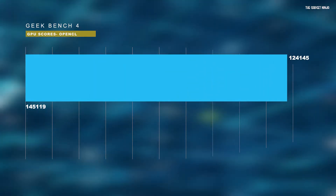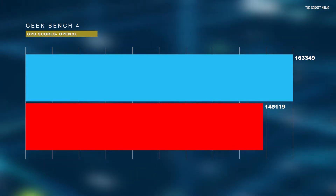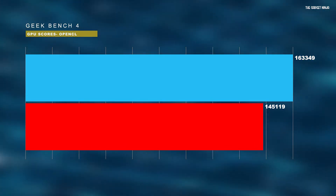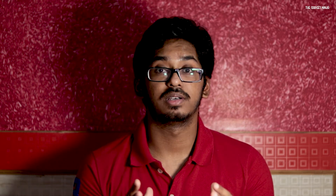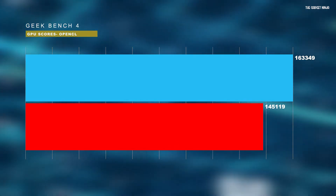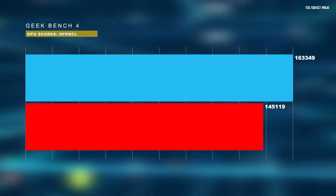Moving to the GPU scores, here the Windows machine was better, which is understandable in my opinion, because Hackintosh machines were never good on Nvidia GPUs — the drivers for the 1070 in my build are pretty outdated. I just hope Nvidia and Apple bury the hatchet and we as customers benefit from it. Windows scored 163349 on OpenCL, whereas the Hackintosh scored 145119. Had the drivers been updated, the scores would be a lot different and I believe the Hackintosh would perform better than Windows here.